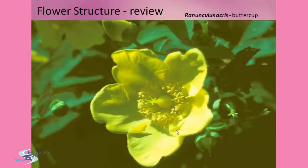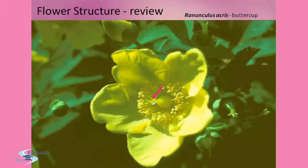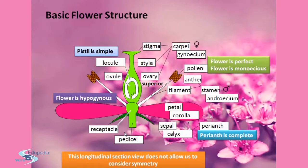This is a flower structure review using buttercup. This is the bud, these are the petals, these are the stamen anthers, this is the stigma, this is the style, and this is the ovary. These are the sepals. This is the longitudinal section view, which does not allow us to consider symmetry, but we can say the flower is hypogynous because the ovary is superior here.